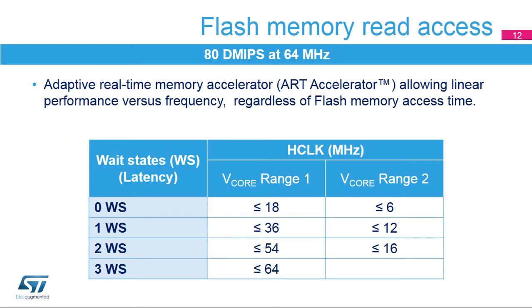In order to read the flash memory, it is required to configure the number of wait states to be inserted in a read access, depending on the clock frequency. The number of wait states also depends on the voltage scanning range. In range 1, the flash memory can be accessed up to 64 MHz with 3 wait states, and with 0 wait states up to 18 MHz. For range 2, it is up to 16 MHz with 2 wait states.